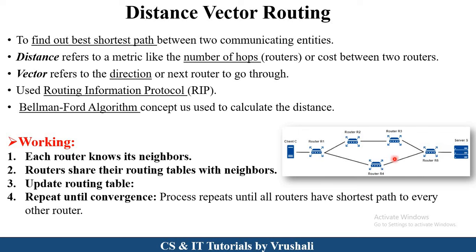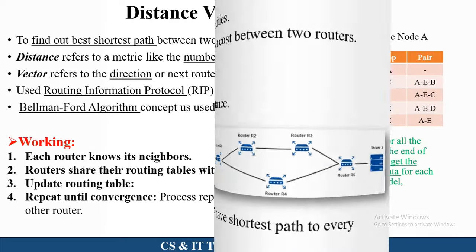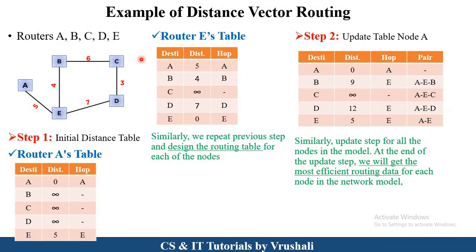So a particular path is R1 to R4, R4 to RF10. Now let's discuss this working with an example. In this example, there are five routers: A, B, C, D, and E. The distance between the routers is mentioned — for example, router A to router E has a distance of 5.